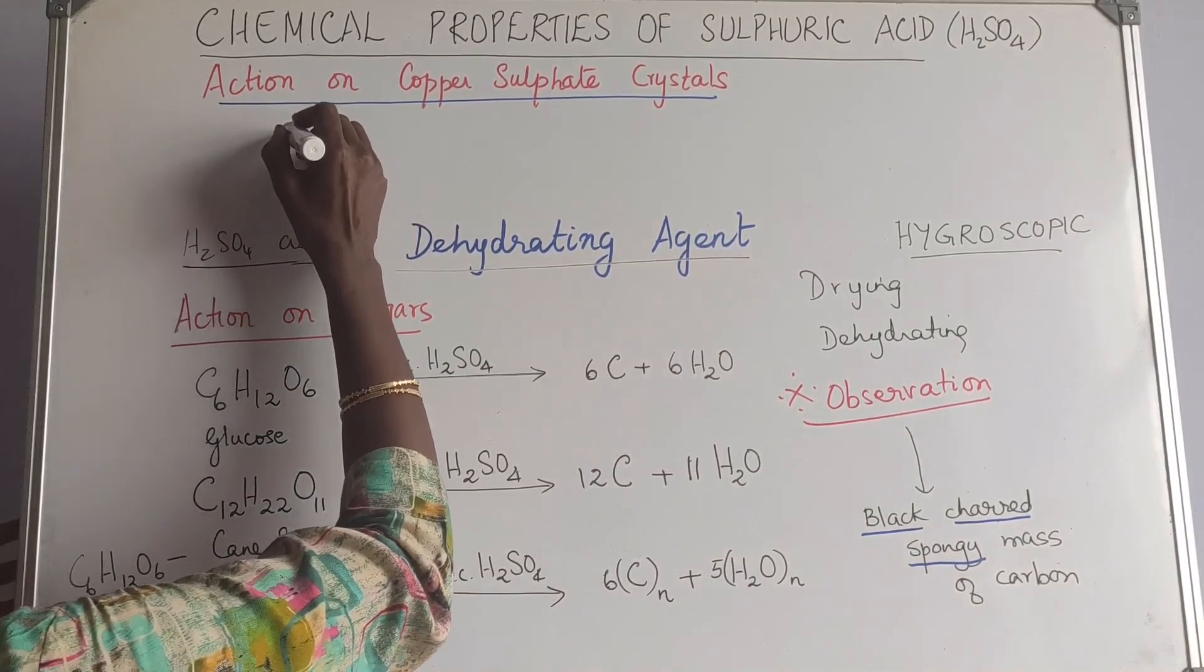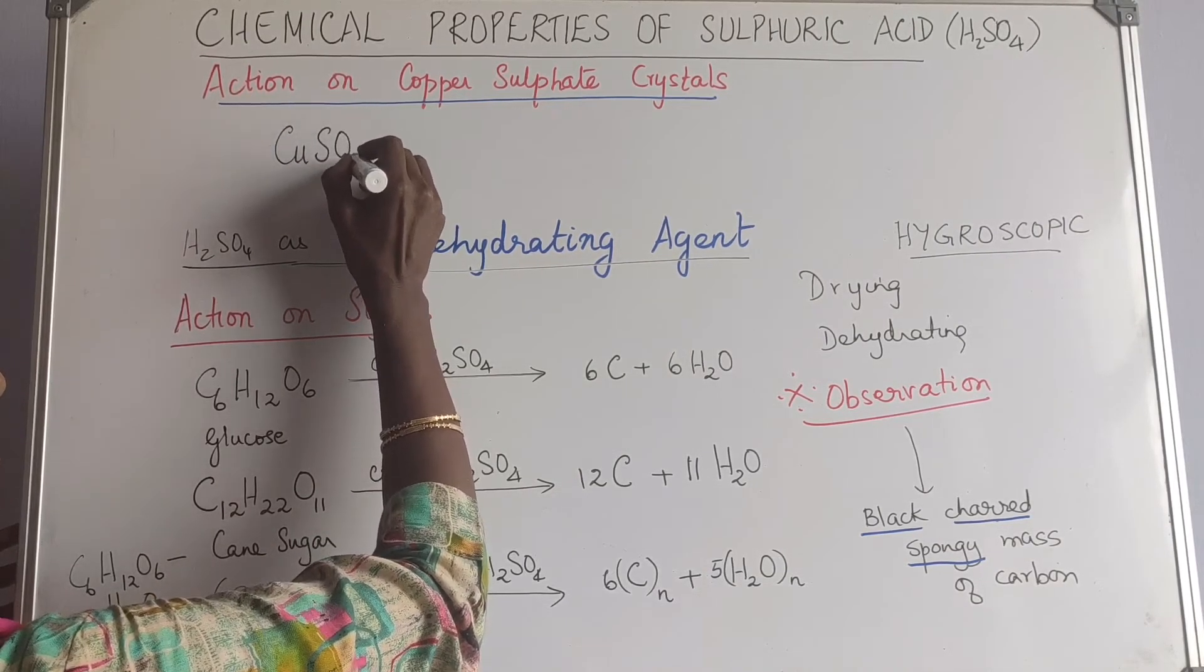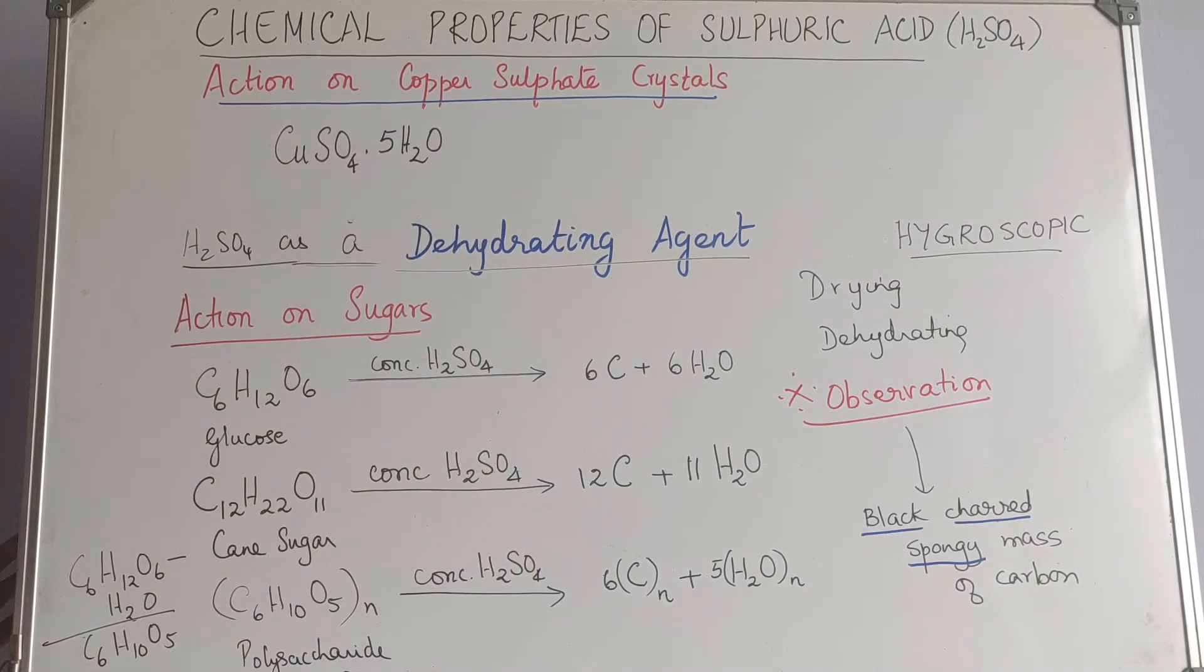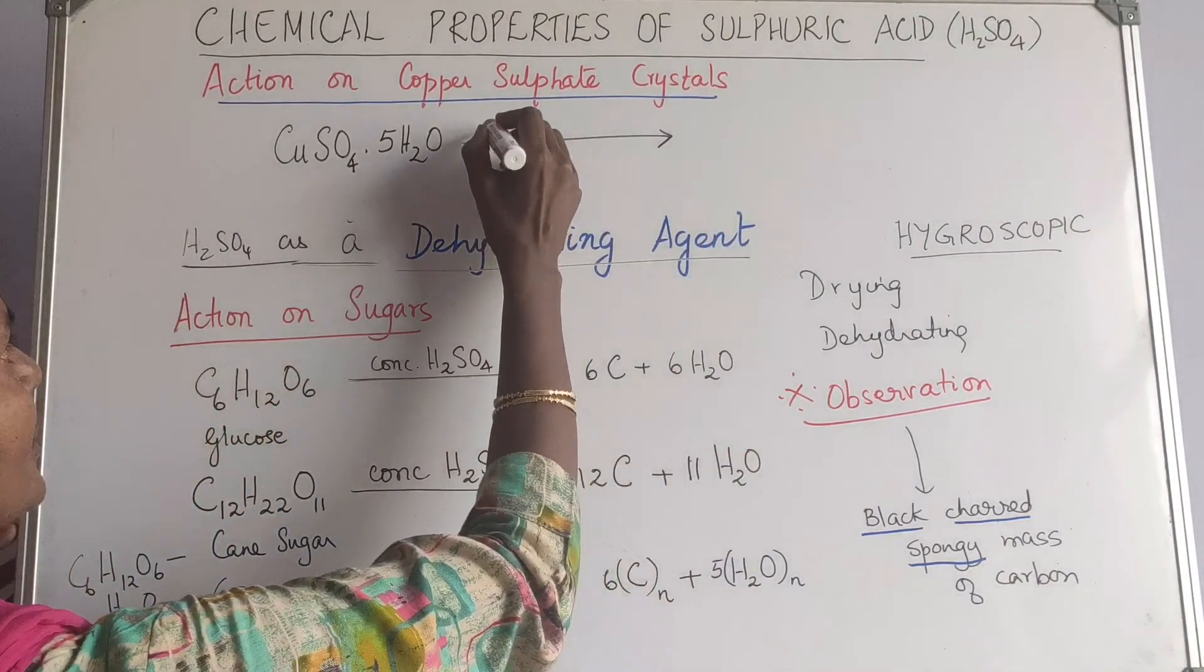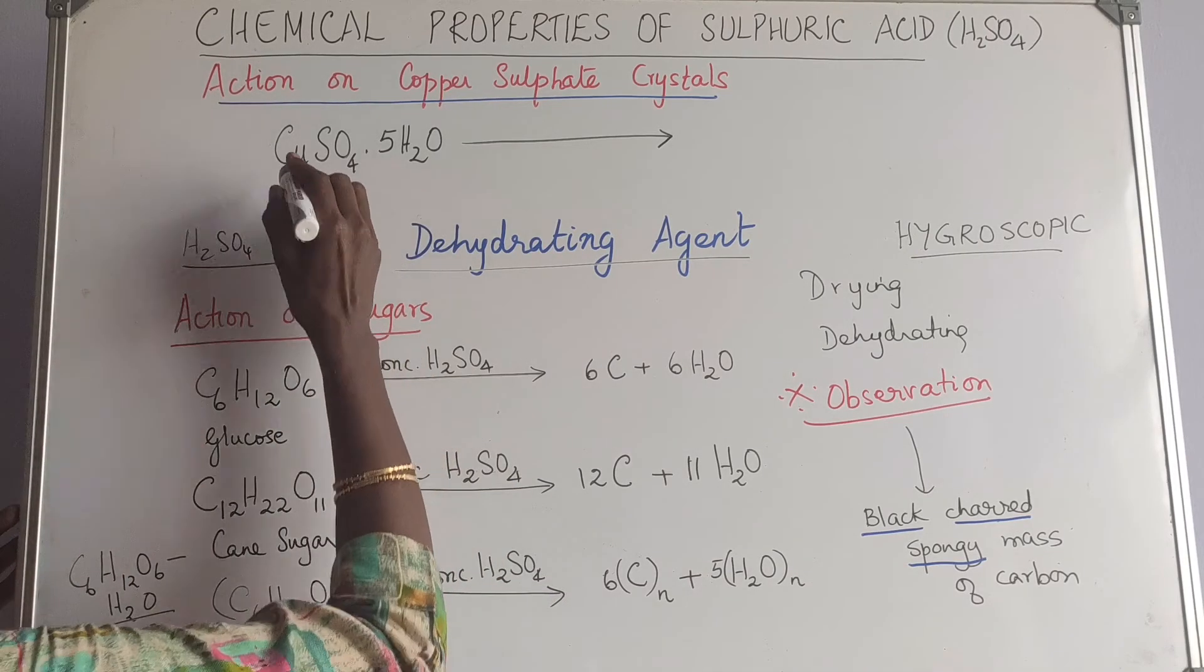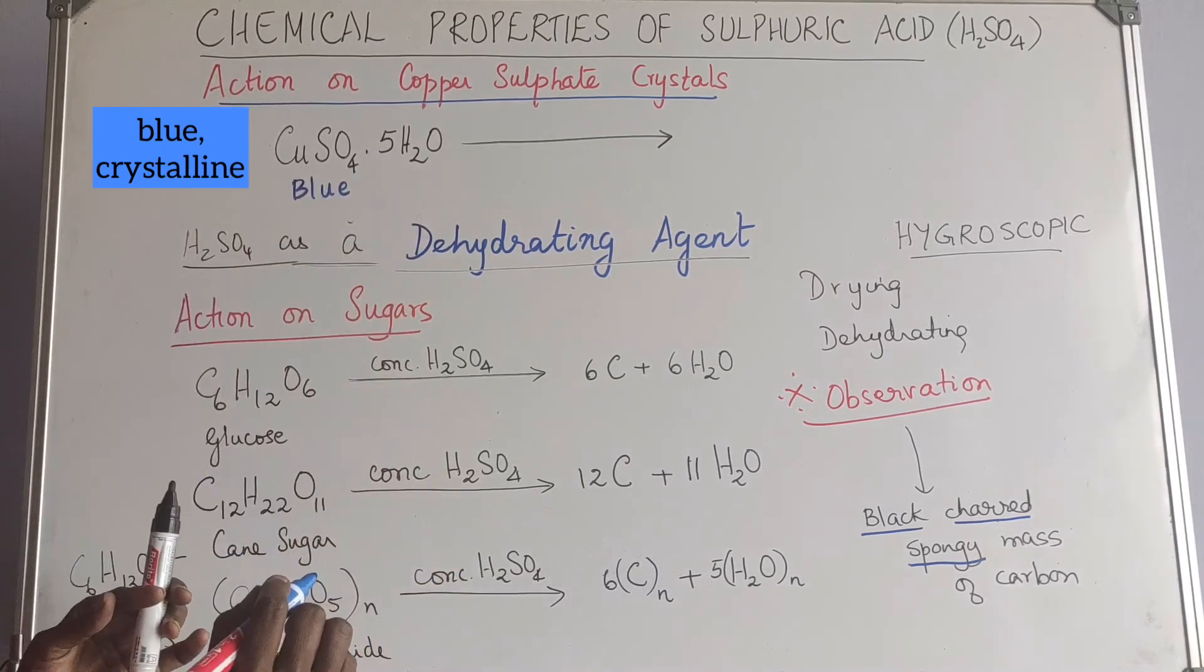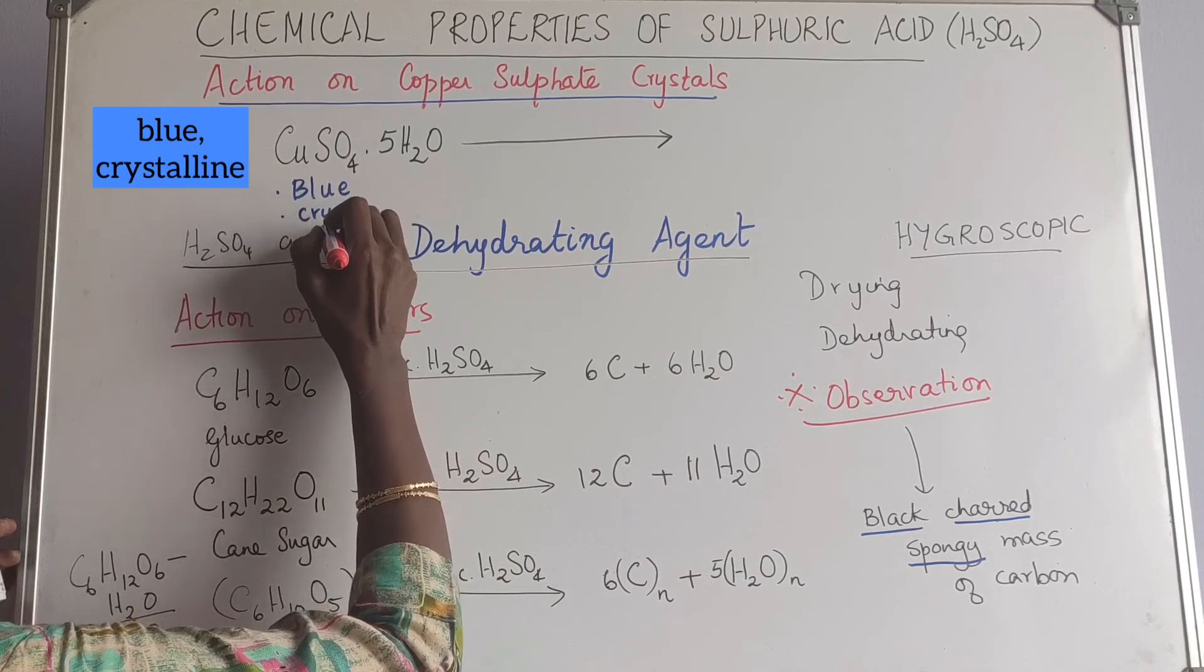Copper sulfate is a pentahydrate. What do you mean by that? Here, it has five molecules of water of crystallization. Water of crystallization is also responsible for the crystalline nature. Now this copper sulfate, if you have noticed, it is blue in color. Copper sulfate is blue in color and it is also crystalline.